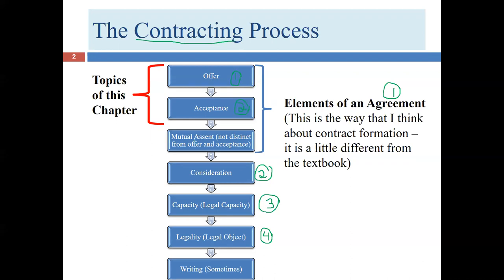The topic of mutual assent we'll cover in chapter five, which will be the next chapter. If we're missing an offer, we don't have an agreement, because an offer is an element of agreement. If we don't have an offer, we don't have an agreement. If we don't have an agreement, we can't have a contract. If we don't have an acceptance, we don't have an agreement, and therefore we don't have a contract.